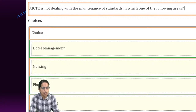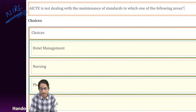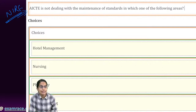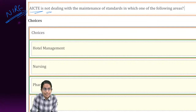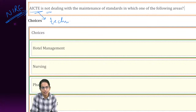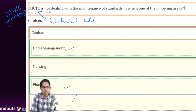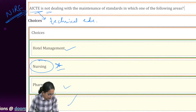This time there was a question on ICT and NIRF rankings. AICTE does not deal with maintaining the standards of which of the following - AICTE deals with technical education, so it focuses on pharmacy, town planning, and hotel management, but not on nursing. Nursing falls under a separate category. This is an important question.